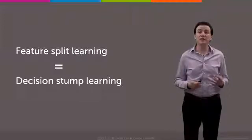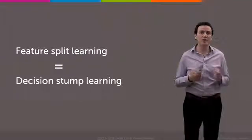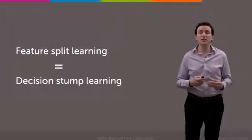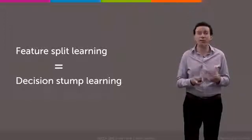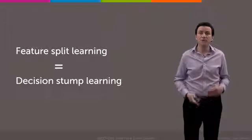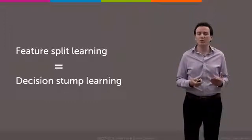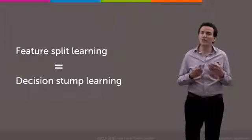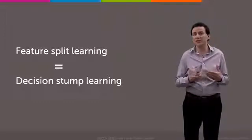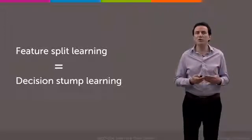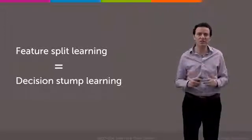We've now outlined the greedy algorithm for learning a decision tree. The first thing we're going to explore is the idea of picking what feature to split on next. We split in our example on credit first, and if we could split on some different feature, how do we decide what to do? It turns out that this feature selection problem, this feature splitting learning problem, can be viewed as the problem of learning what's called a decision stump, which is that one-level decision tree.